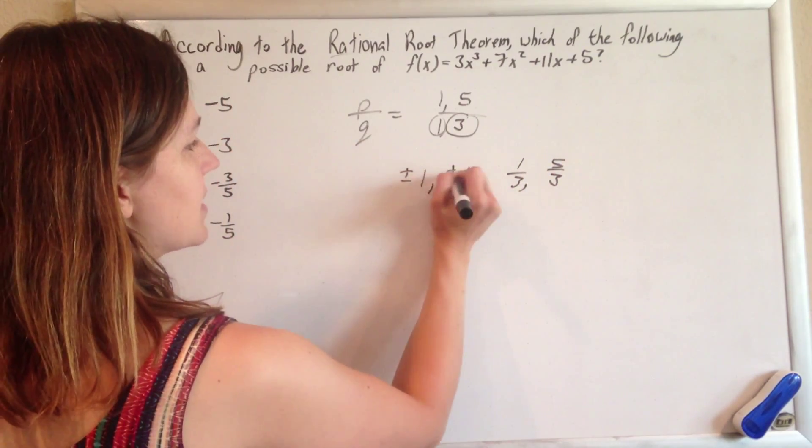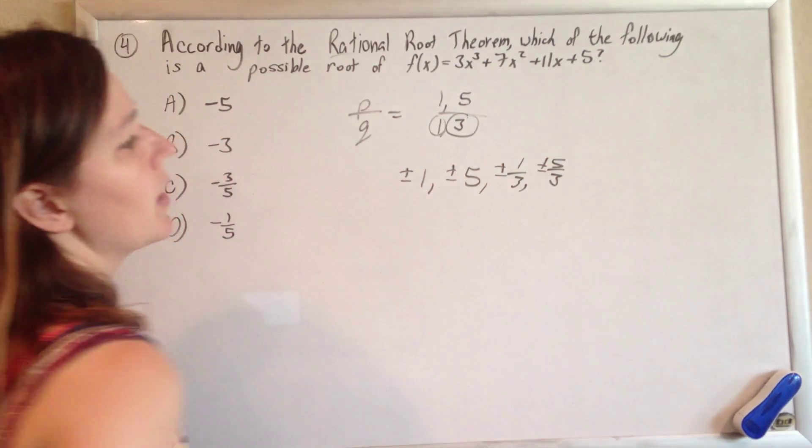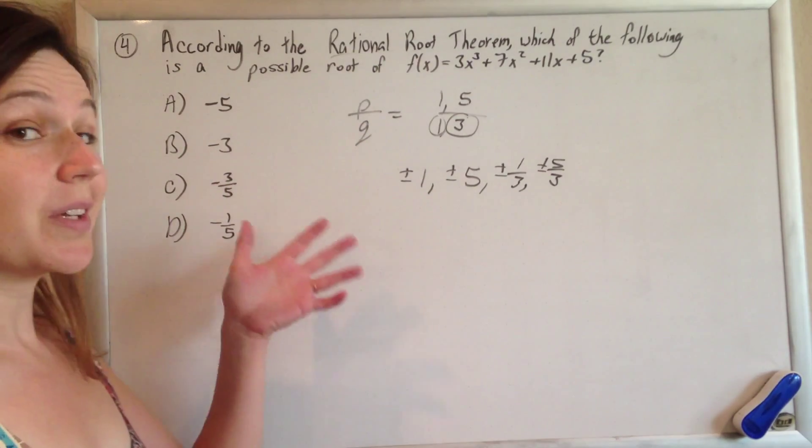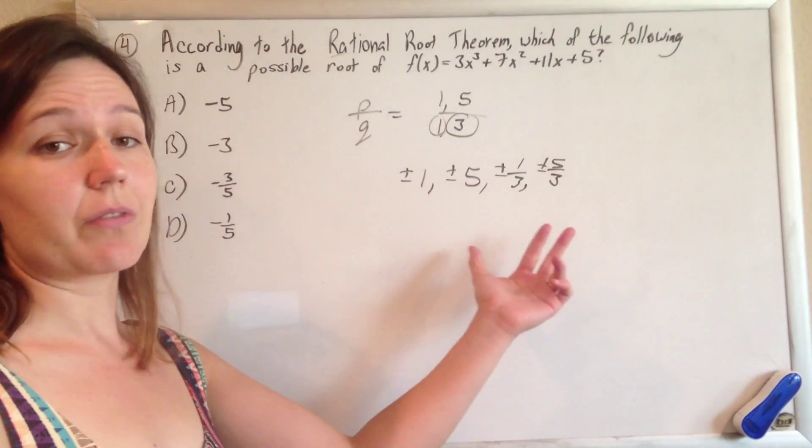And you have plus or minus of every single one of these. And so those are, if the rational root exists, it has to be one of those.